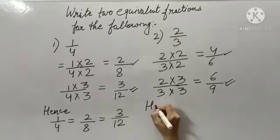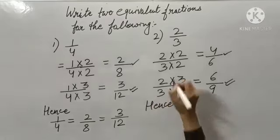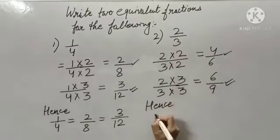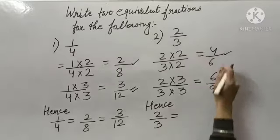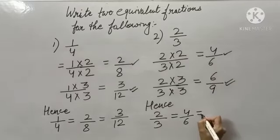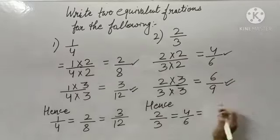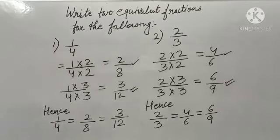So in the last I can write: hence my question was 2 upon 3, which is equal to 4 upon 6, which is equal to 6 upon 9. I hope you understood. Thank you.